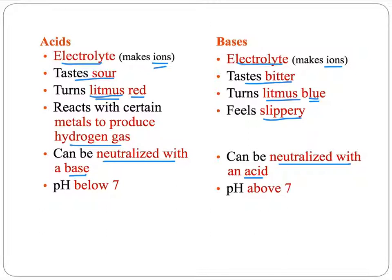And last, acids have a pH below 7, and bases have a pH above 7.